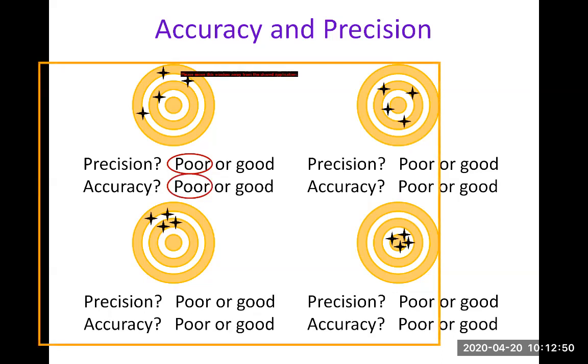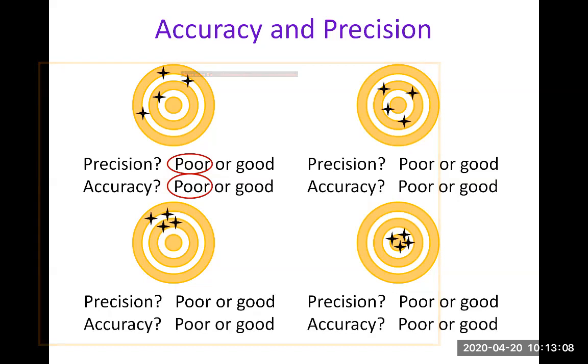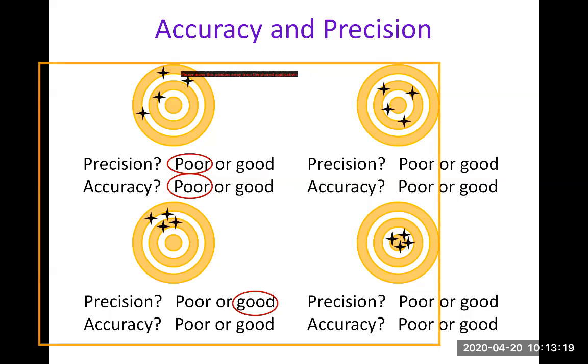So let's move down to the bottom left target. So what do you think of precision in this one? Yeah, so precision is good. Yes, because you see that the four shots are clustered together. So that means you're able to repeat and always land within the same area. So that means it's good precision.